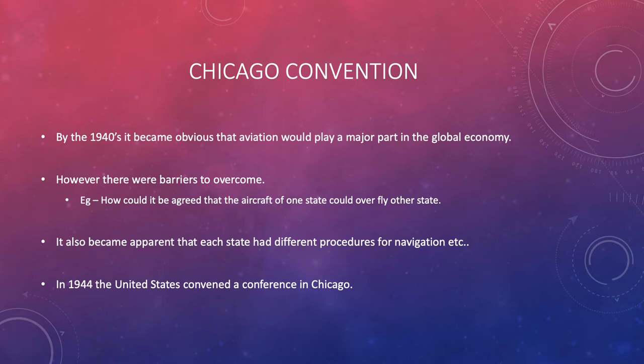We're going to look at something called the Chicago Convention. Back in the 1940s, aviation was starting to boom and was getting more and more prominent across much of the world. They realised they needed to do something to ensure that all the countries that were starting to develop aviation industries were complying with the same ideas. So they had a meeting to overcome the barriers where people had different ideas, so everyone would be operating on the same page. That meeting took place in Chicago in 1944 — known as the Chicago Convention — and the kinds of things they discussed included what would happen if we overflew other countries, different navigation procedures, and some rules of the air.